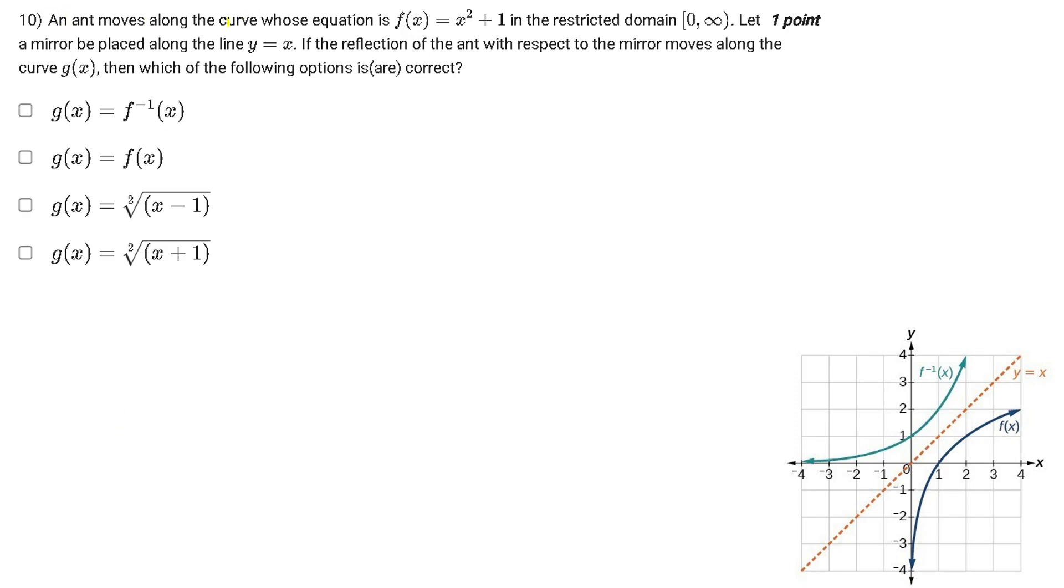An ant moves along a curve whose equation is y = f(x) in the restricted domain [0, ∞). Let a mirror be placed along the line y = x. If the reflection of the ant with respect to the mirror moves along the curve g(x), then which of the following options is correct? According to the options, we just need to understand what is this g(x), so we have to find the equation of g(x).